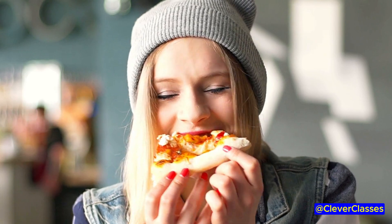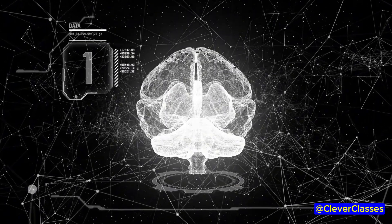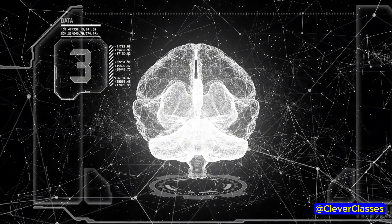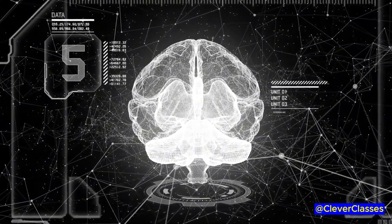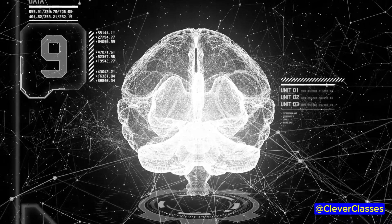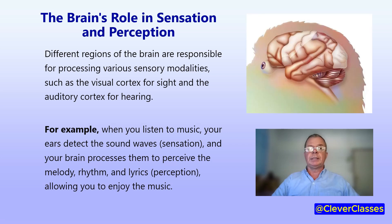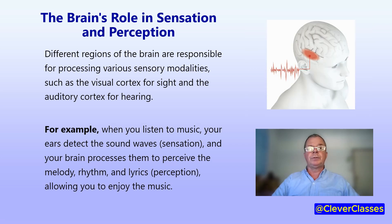The perception contributes to your overall enjoyment of the meal. The brain plays a central role in both sensation and perception. It receives sensory input from the environment around us and processes this information to create our perceptions of the world. Different regions of the brain are responsible for processing various sensory modalities, such as the visual cortex for sight and the auditory cortex for hearing.